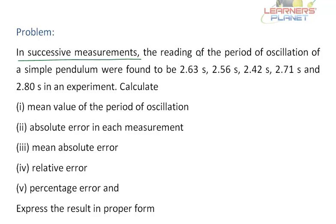In successive measurements, the readings of the period of oscillation of a simple pendulum were found to be 2.63 seconds, 2.56 seconds, 2.42 seconds, 2.71 seconds and 2.80 seconds. There are five observations.